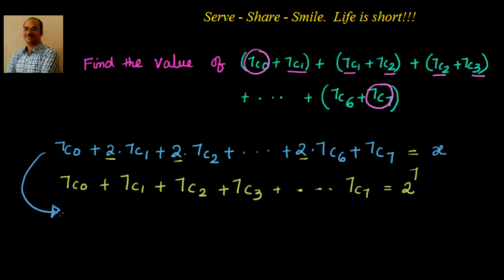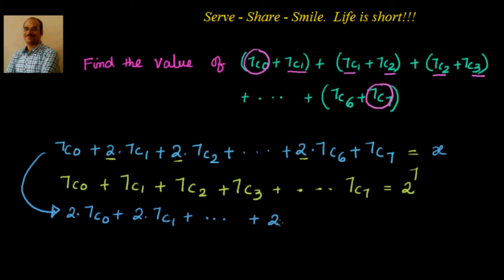So I will call this sum X, and try to add 7C0 plus 7C7 on both sides. My next step: I write 2×7C0, so I have added one extra 7C0. It becomes 2×7C0 plus 2×7C1, and my last term will be 2×7C7, which equals X plus 7C0 plus 7C7. Other than the first and last terms, all remaining terms already had a factor of 2.